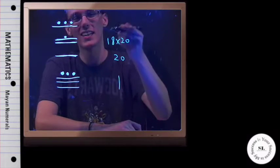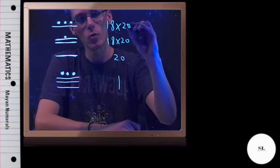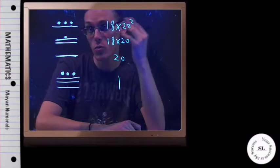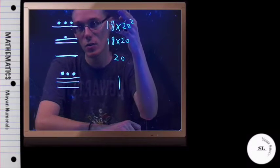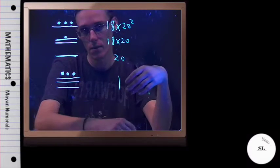And then the next position, it would be 18 by 20 squared. And the next one, if there was another one, would be 18 by 20 cubed, 18 by 20 to the fourth, and so on, and so on.